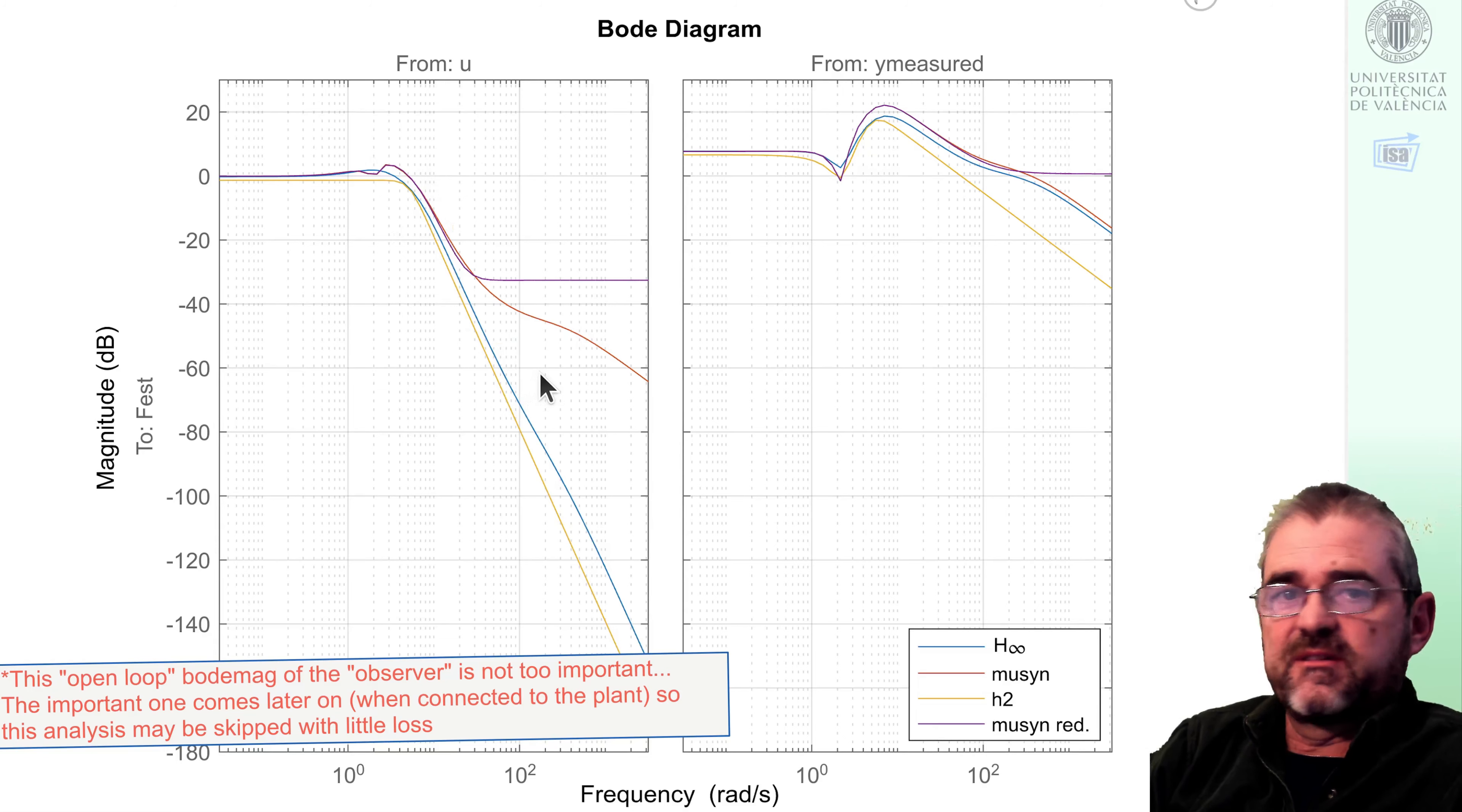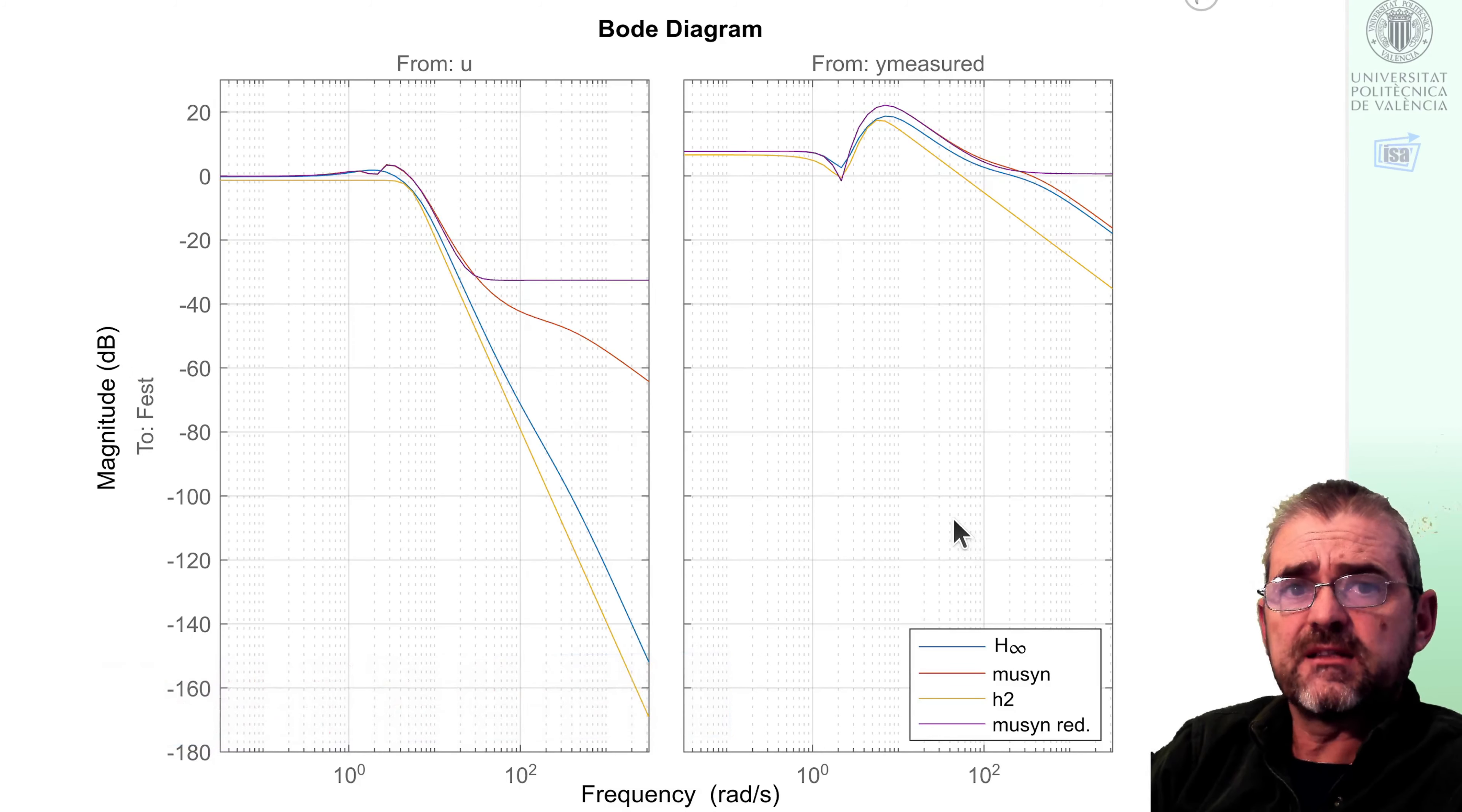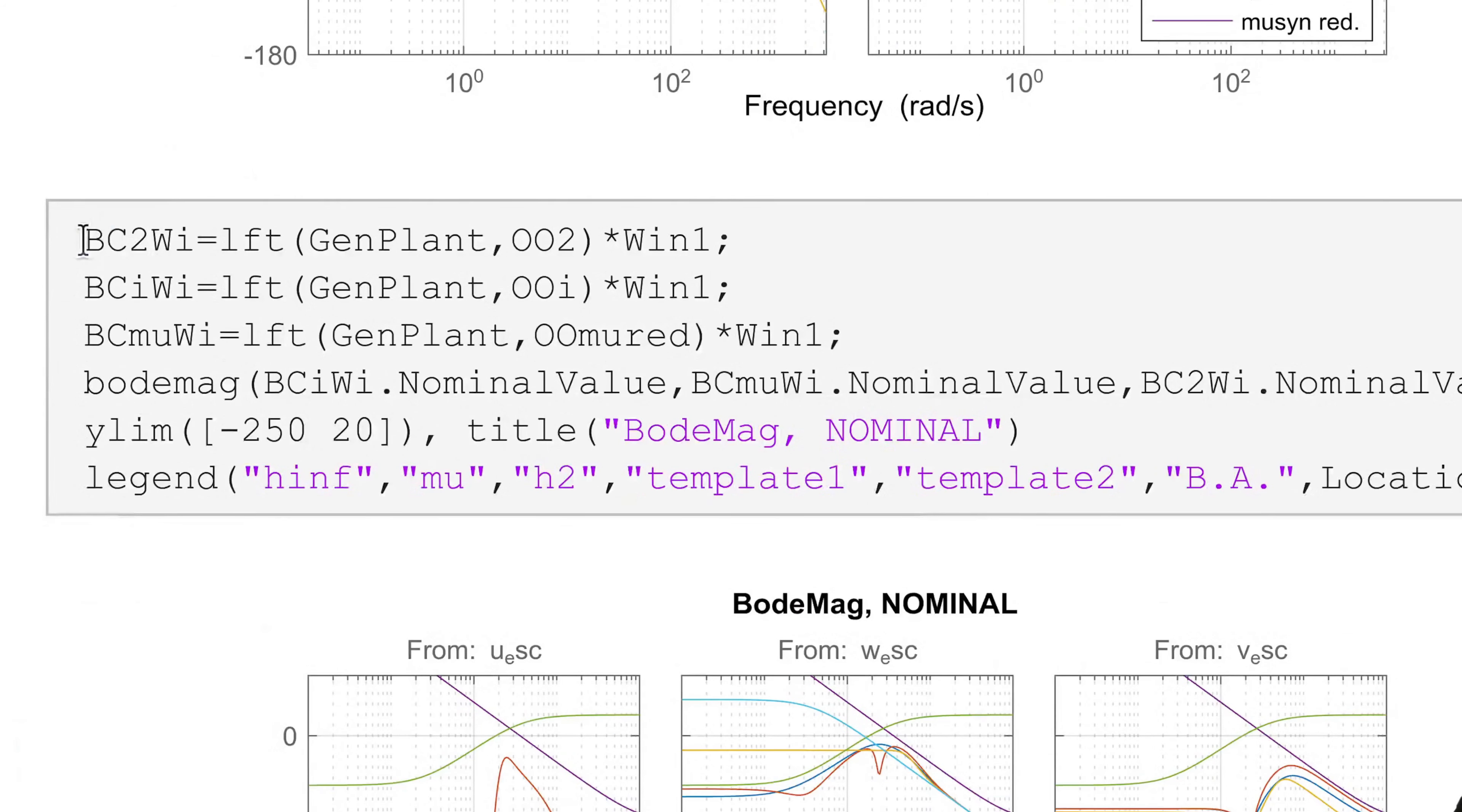Regarding the frequency response from u, it's kind of difficult to interpret in the sense that what we are aiming for is for some frequency behavior of the estimation error and not of the actual estimation. So you can just forget about this plot. Maybe I even shouldn't have shown it.